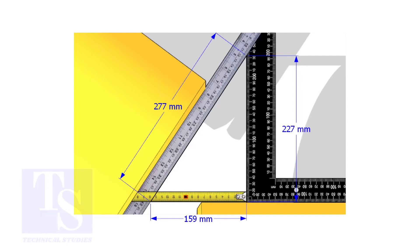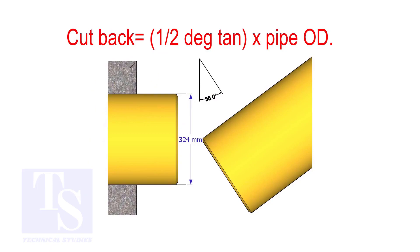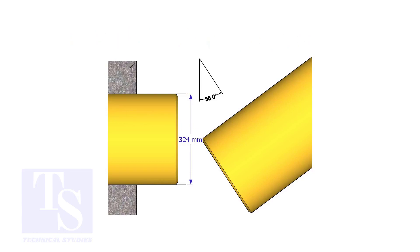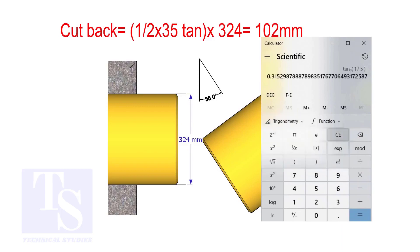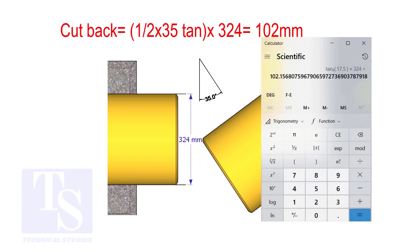How to calculate the cutback of a single cut miter. When it is a single cut, the cutback is half degree tan, multiplied by the OD of the pipe. The answer is 102 millimeters.